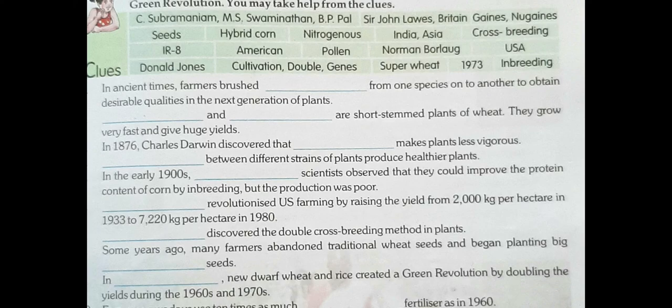So the answer is in-breeding. Come to question number 4: dash between different strains of plants produce healthier plants. So what crosses between different species of plants to produce healthier plants? Answer is cross-breeding. Then in the early 1900s, American scientists observed that they could improve the protein content of corn by in-breeding, but the production was poor.